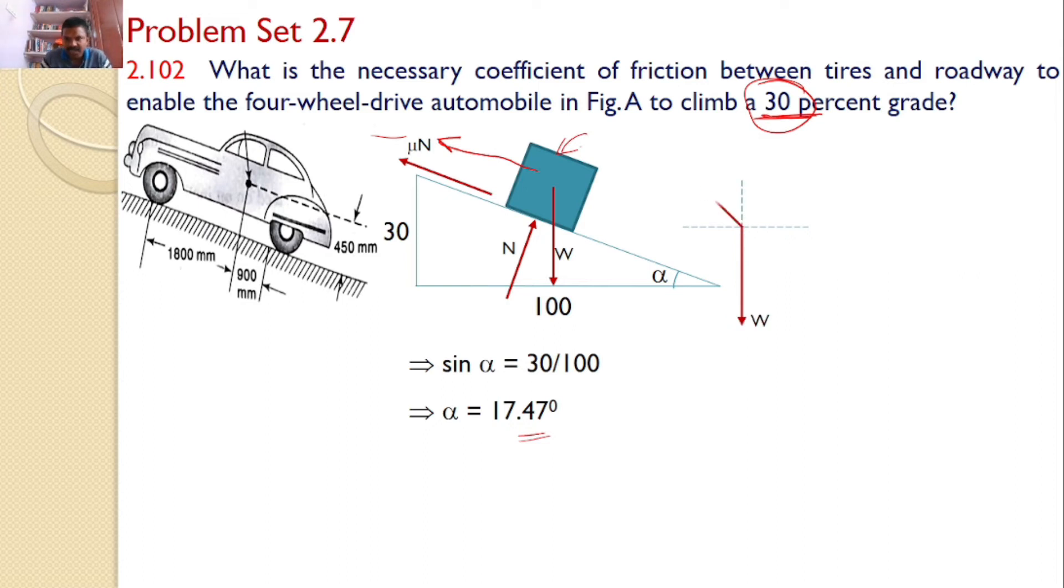Now transfer all the forces onto a separate XY plane. So W, mu N and N. And we know that this angle is alpha. That means mu N makes an angle alpha with the horizontal. And hence, N makes an angle alpha with the vertical. So this angle is alpha and this angle is alpha.